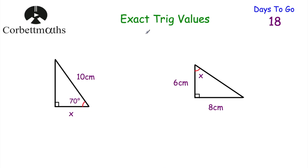Today we're going to be looking at exact trig values. Before we move on, I thought we'd warm up by doing a few trigonometry questions. Here's two trigonometry questions: we've got a right-angle triangle and I want you to find the length of one side, and in another right-angle triangle, can you find the size of this angle? Press pause now and work out the length of the side and then the size of the angle.